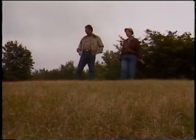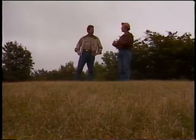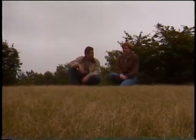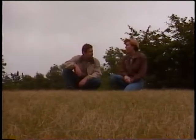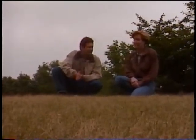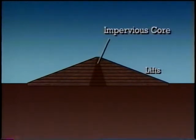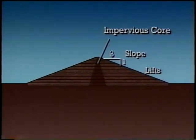Soil conditions do matter for berm feasibility. Most berms are constructed of compacted clay soil — clay is a very impervious soil and prevents seepage through the berm. If a community has the wrong kind of soil, it can be very expensive to haul in the right kind. The first step in constructing a berm is clearing away any topsoil or vegetation. Then the berm is built up with individually compacted layers of soil called lifts. A core of impervious soil helps prevent seepage, and properly sloping the berm — typical side slopes are one to three — helps reduce erosion. This is part of why berms tend to take up so much space.